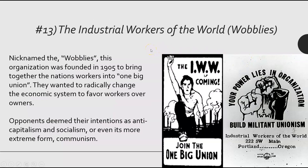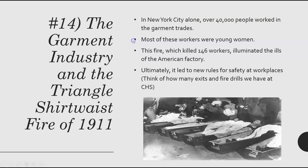We also see the Industrial Workers of the World, nicknamed the Wobblies, founded in 1905. They wanted to bring all workers into one big union, which made management and the wealthy pretty nervous. Opponents deemed their intentions as anti-capitalist, socialist, or even the more extreme form of socialism — communism. So we have this fundamental divide between the workers and those who profit off of the workers.